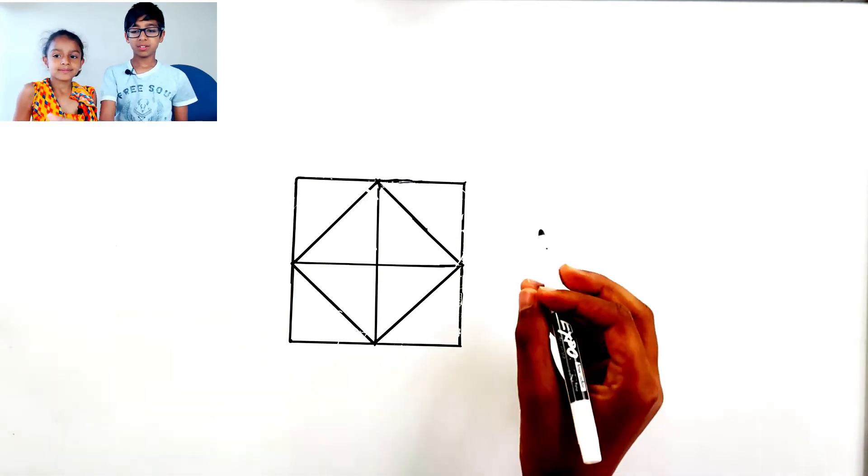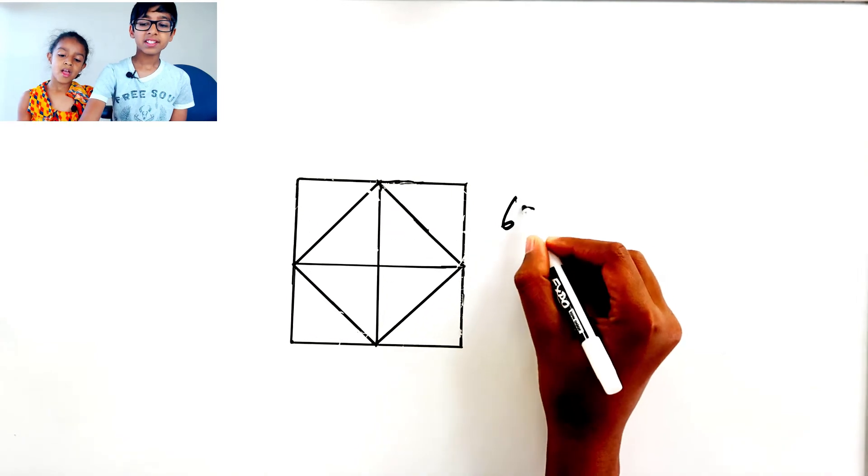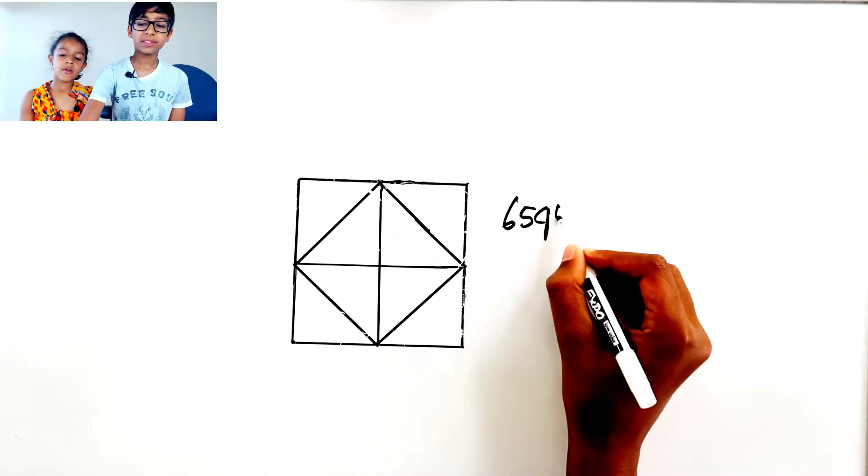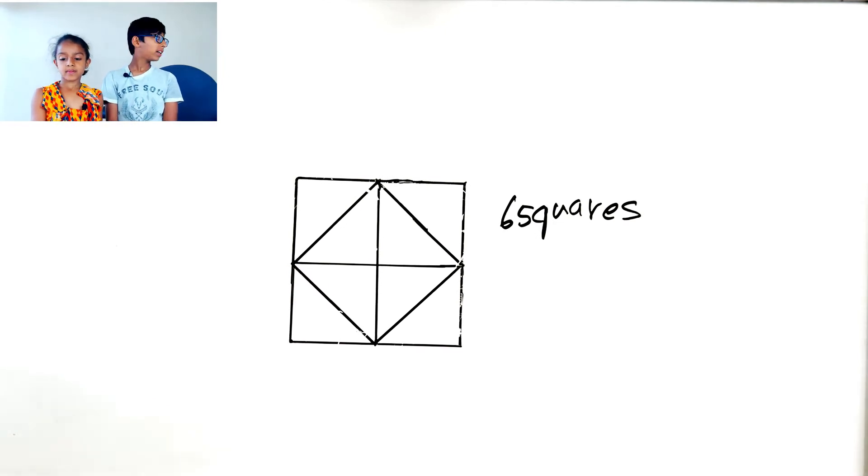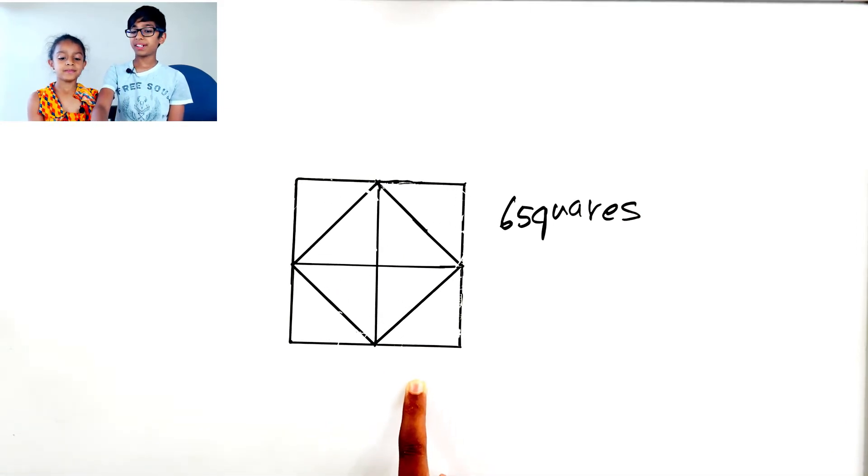Cool! Okay. So, we found six squares. Okay, so now, let's see how much triangles we can find in this square.